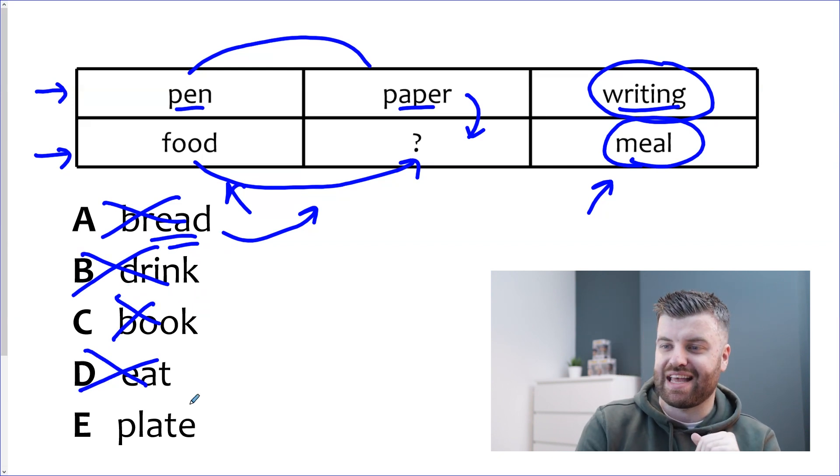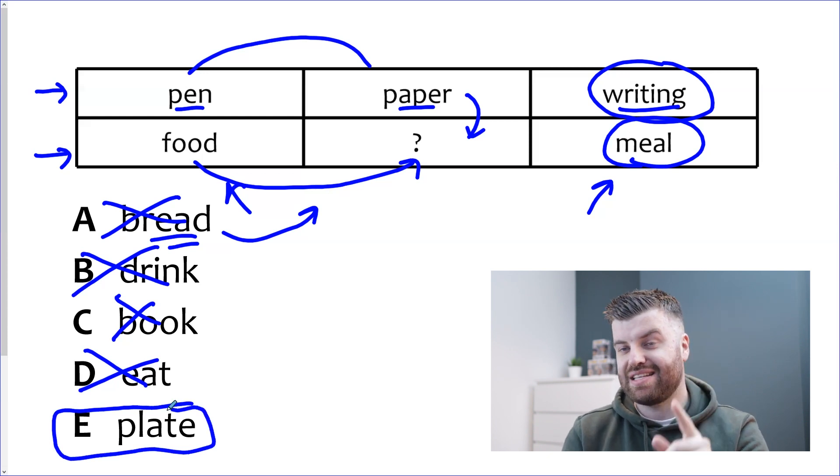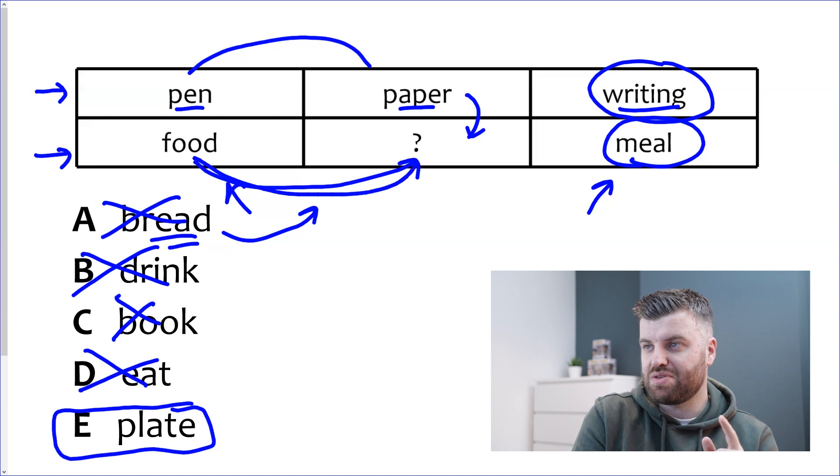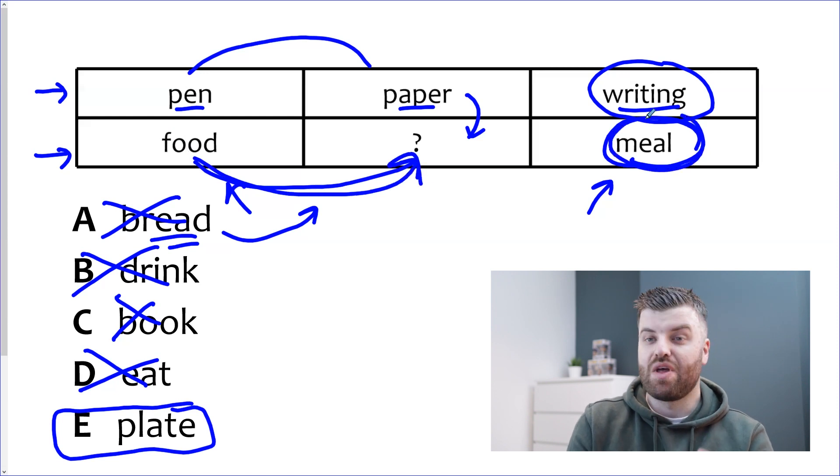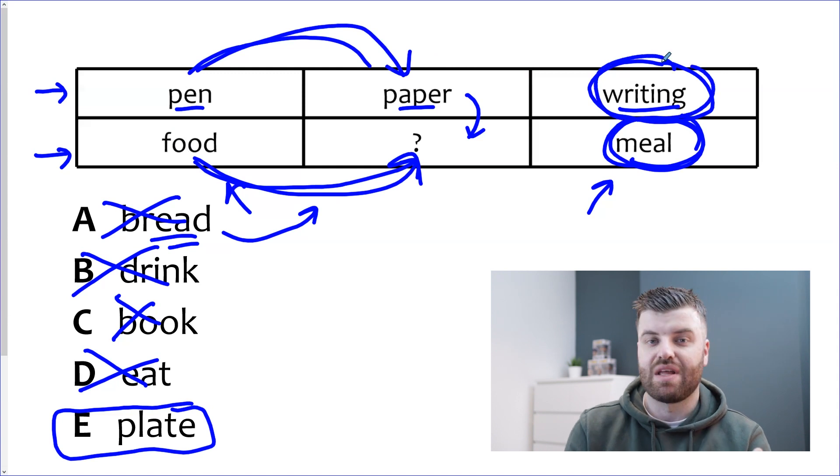So I know for a fact that everyone watching this video has gone for E plate because we can say the sentence that food goes on a plate to make a meal which matches pen goes onto paper to make some writing. That is the answer E.